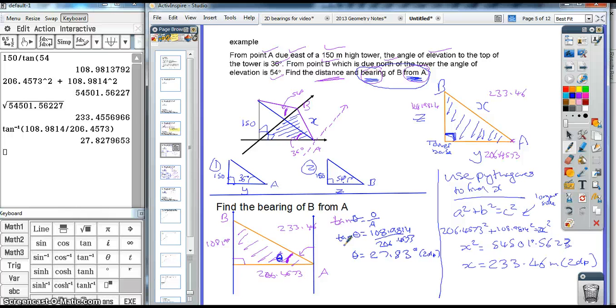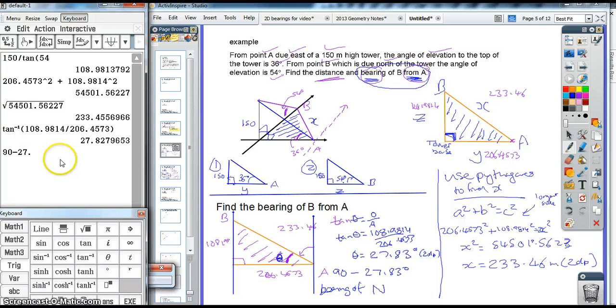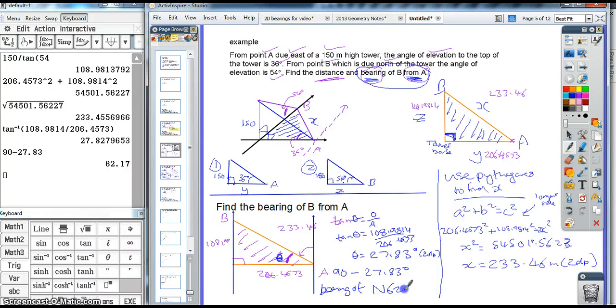Now, the most common mistake made at this stage is that people think they're finished, and they've worked out the angle and then they've stopped, but that's not the bearing. The bearing of B from A is this here. We need to know that. Now, it's a fairly straightforward step from here to here, because we know that's 90 degrees in total. So, the bearing of B from A is going to be 90 minus 27.83 degrees, which gives us a bearing of, I remember we started at north, then we went to, it's going to be, 90 minus 27.83, gives us 62.17 degrees west. And that is our answer. That is our final answer there.